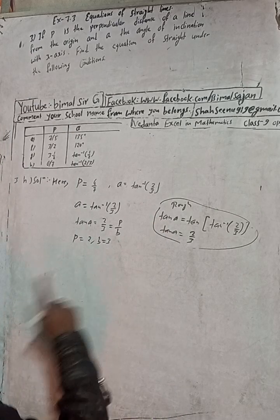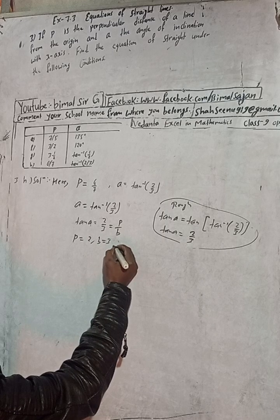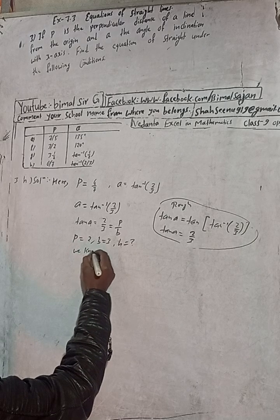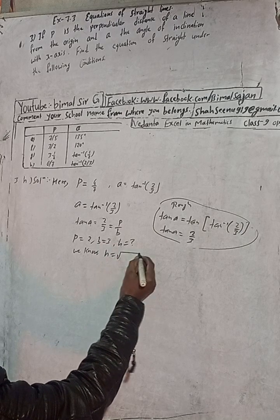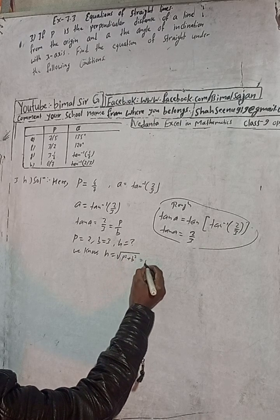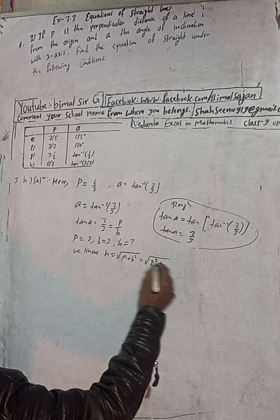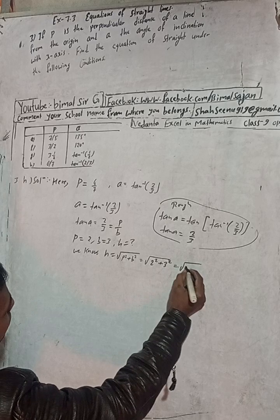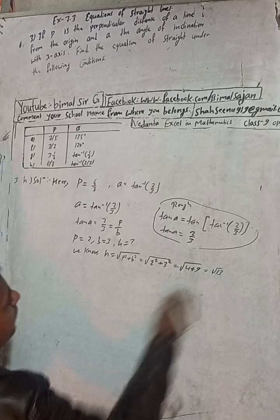Now if p is equal to 2 and b is equal to 3, what I will do here, I have to find h. So h is equal to, we know h is equal to root under p squared plus b squared. So what is p squared? P squared means 2 squared plus b squared means 3 squared. So this is equal to 2 squared is 4 plus 3 squared is 9, so this is root under 13. 9 plus 4 is 13.